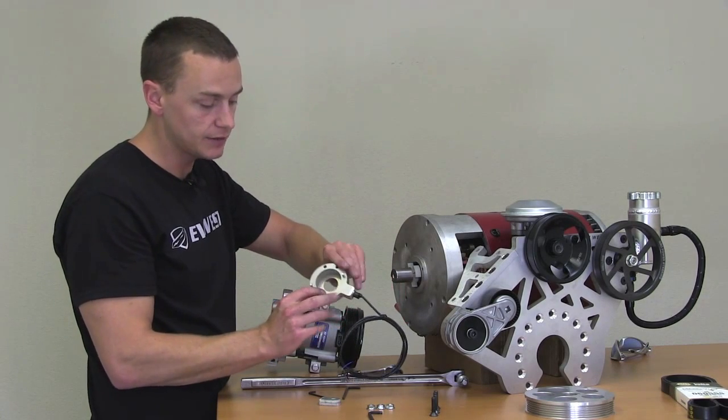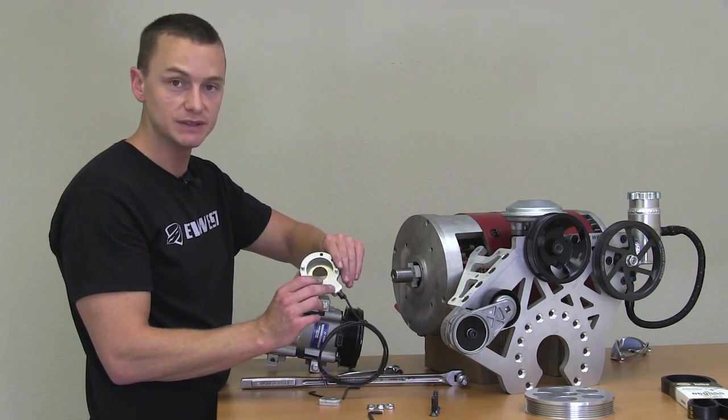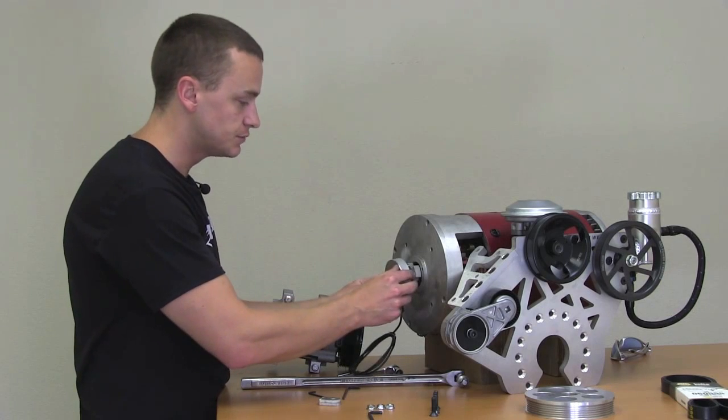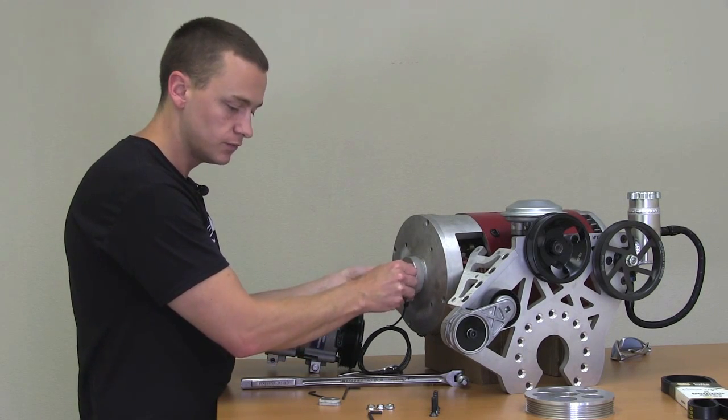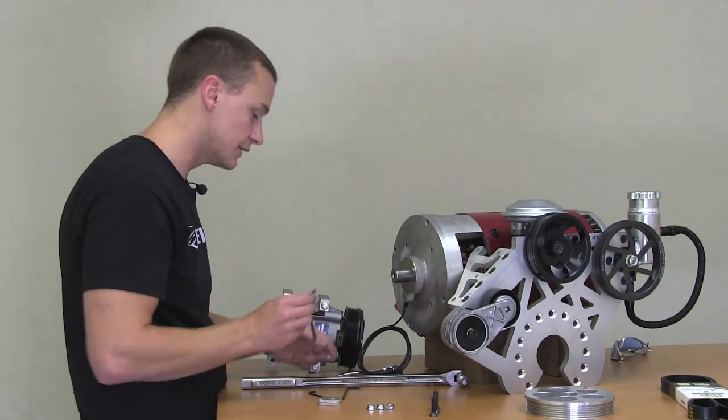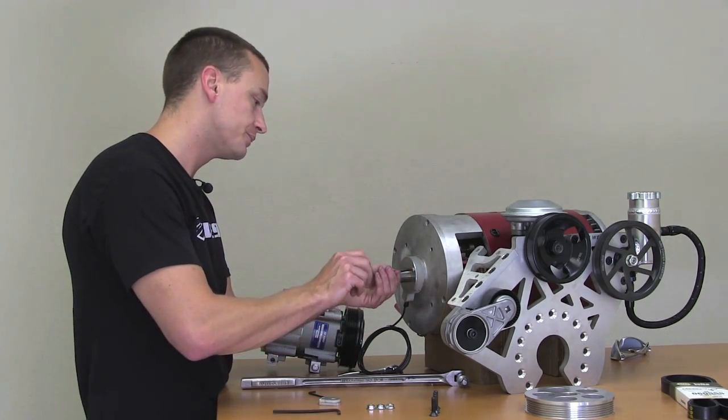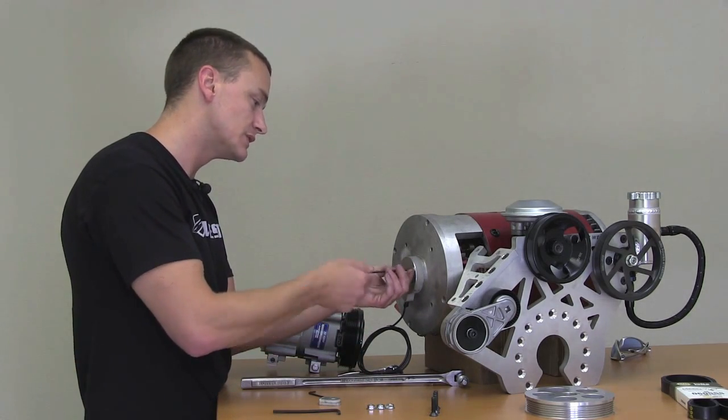This is the cover plate here. This has our proximity sensor inside. This just bolts right up here to the front. Really nice clean installation. We're going to go ahead and just snug these down.